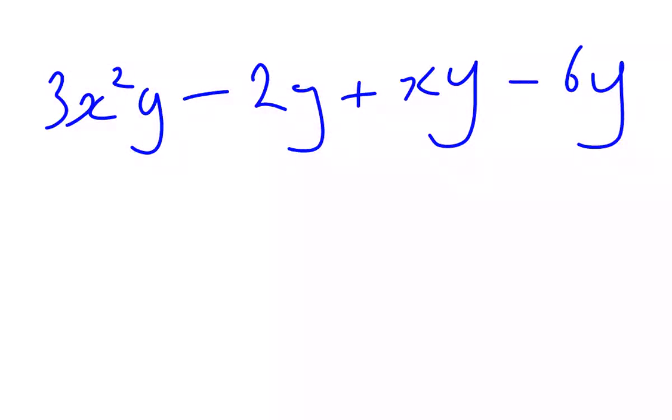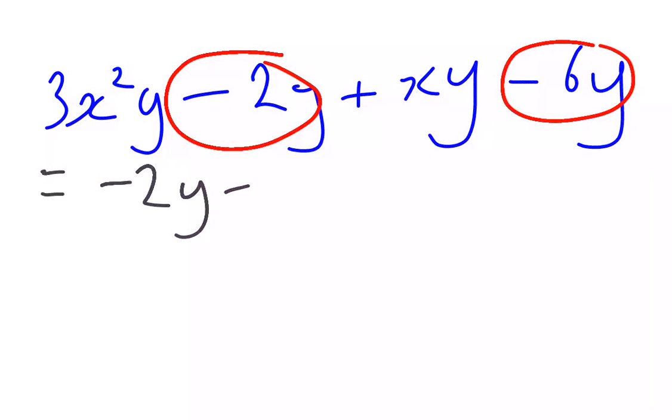Again, they ask us here. Simplify by collecting like terms. We gather together our like terms. We have negative 2y and negative 6y are my only like terms. Here and here. xy and 3x squared y are not like terms because they have different pronumeral parts. So negative 2y minus 6y plus 3x squared y plus xy.